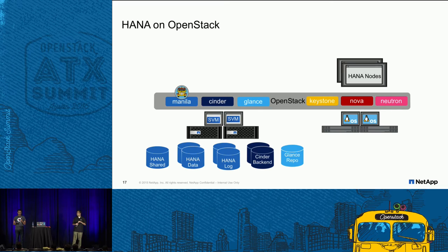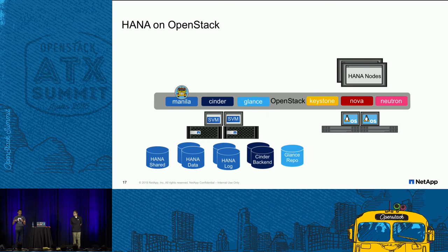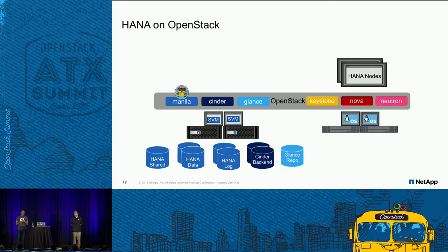Here is an overview of the deployment. On the right-hand side we have the HANA nodes, which are Nova instances. We deployed HANA in a multi-node, scale-out architecture — multiple nodes of the same database running on Nova. On the left are all the storage components: Cinder and Glance provide boot volumes for the Nova instances, and Manila provides NFS shares for HANA.